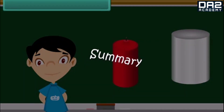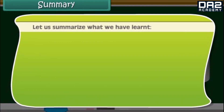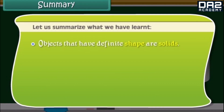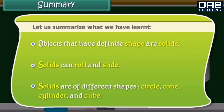Summary. Let us summarize what we have learnt. Objects that have definite shape are solids. Solids can roll and slide. Solids are of different shapes: circle, cone, cylinder and cube.